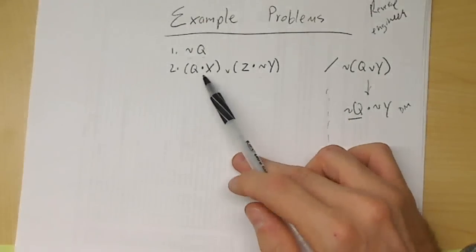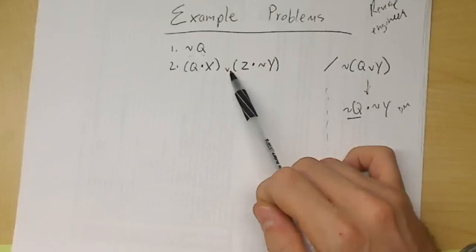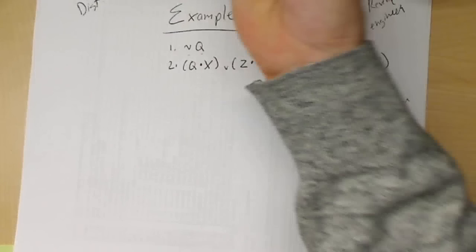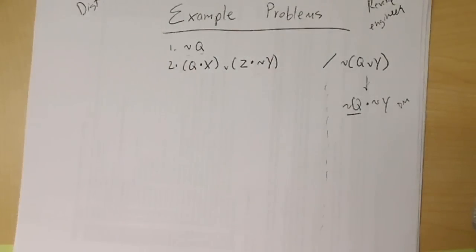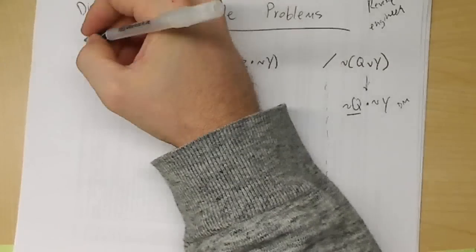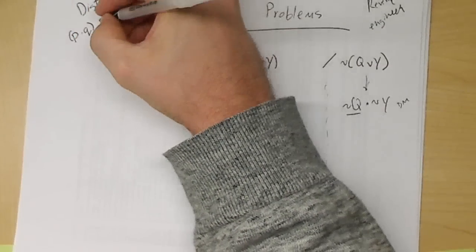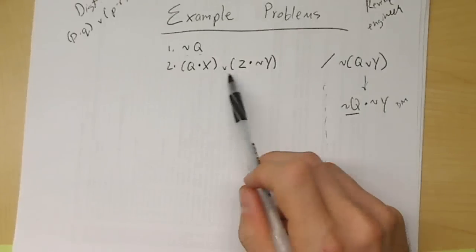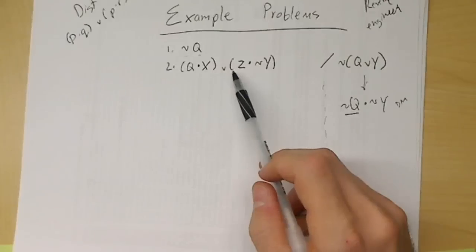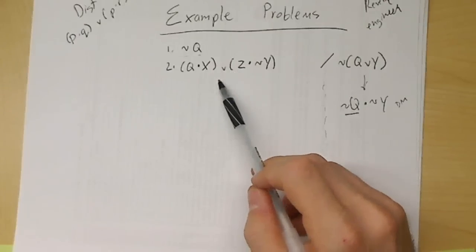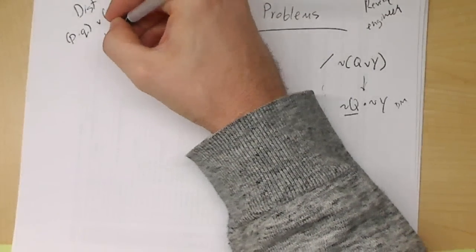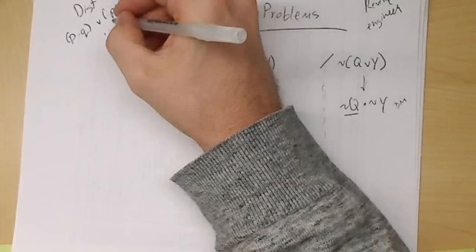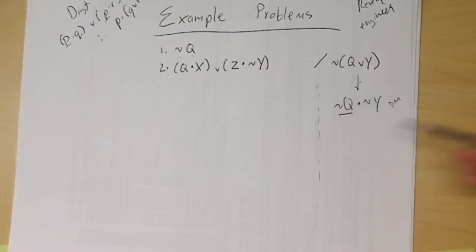The first rule you should look at here is whenever you have conjunctions and a disjunction is to think about either distribution or associativity. The distribution rule looks like this: if you have P∧Q or P∧R, you could get to P∧(Q∨R). But the problem is I need a P in both places, but I don't have that. So distribution is off the list. What about associativity? The rule of associativity says that P∧(Q∨R) is logically equivalent to (P∧Q)∨R. But we don't have that either.